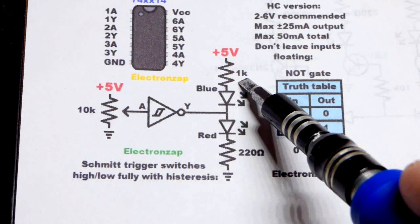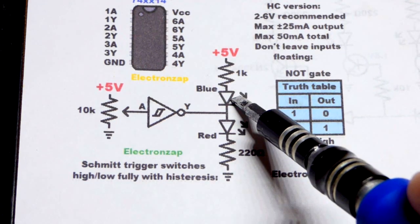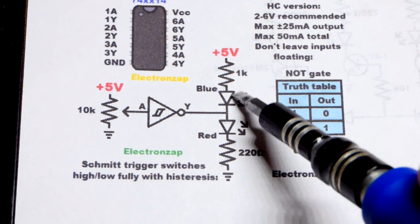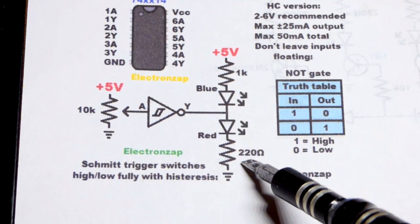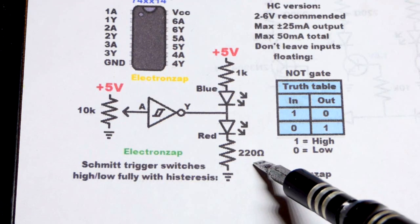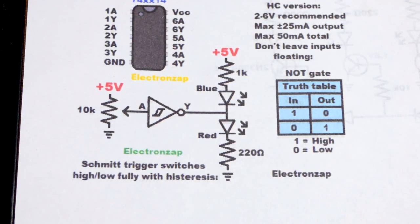We have a higher value resistor, 1 kilo ohm, protecting the blue LED because it's naturally brighter. A lot less current gets it just as bright as the red LED. So a lower value resistor, 220 ohm, to protect the red LED.